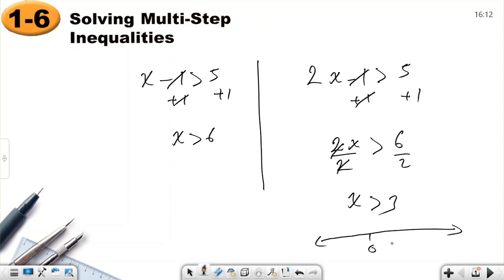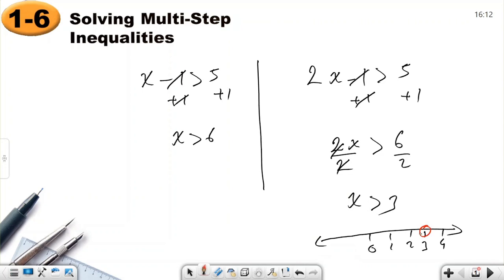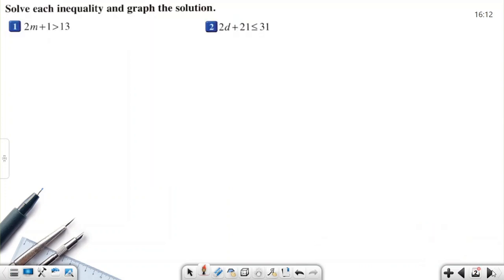So let's draw it: 0, 1, 2, 3, 4. Let's check. 3 is empty because I put an empty circle. There is no equal sign. And greater than 3 is our solution set. This kind of inequalities, we call it multi-step inequalities. It takes more steps to solve it.